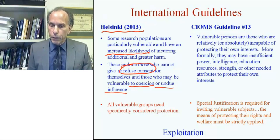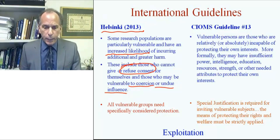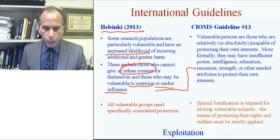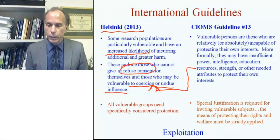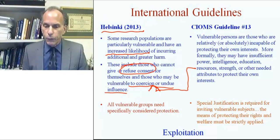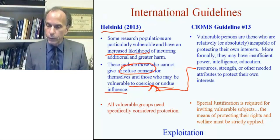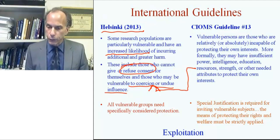The CIOMS guidelines really act as a supplement to Helsinki because they help us define who is more likely to be vulnerable to coercion or undue influence. The CIOMS guidelines number 13 says vulnerable persons are those who are relatively or absolutely incapable of protecting their own interests.